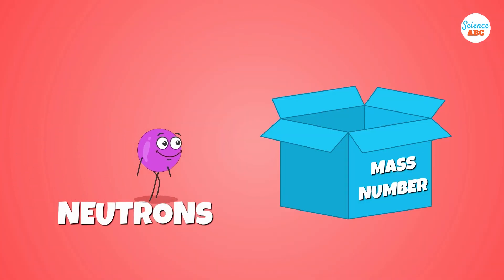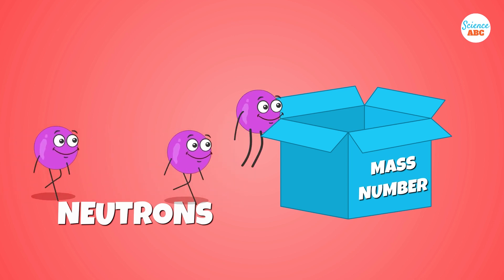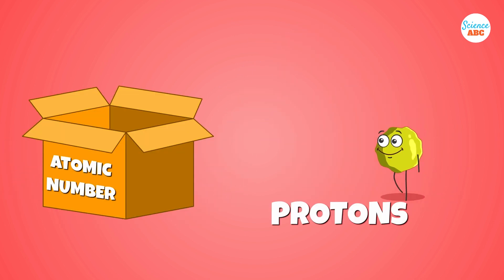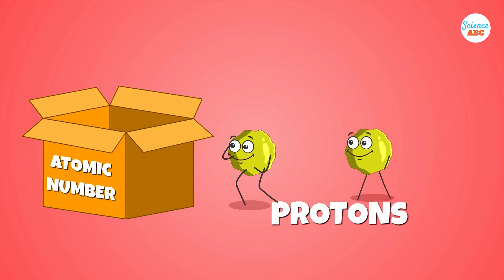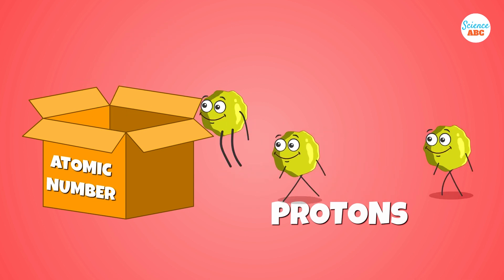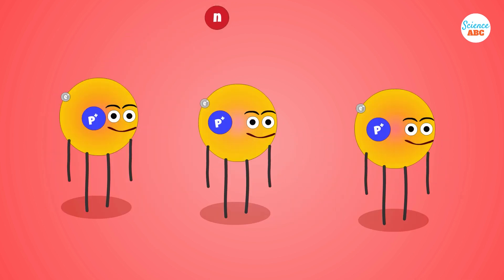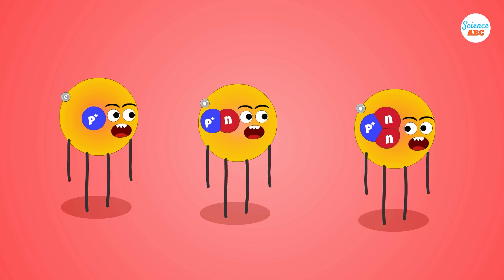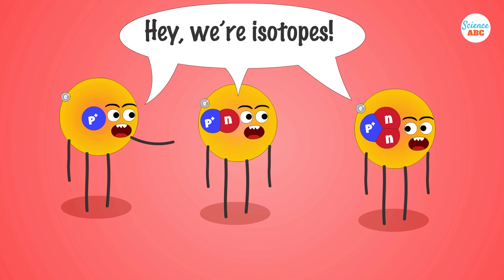The mass number of an element is determined by how many neutrons it has, while the atomic number is determined by its number of protons. If you add or remove neutrons from an atom's nucleus while keeping the number of electrons the same, you will essentially create an isotope of that element.